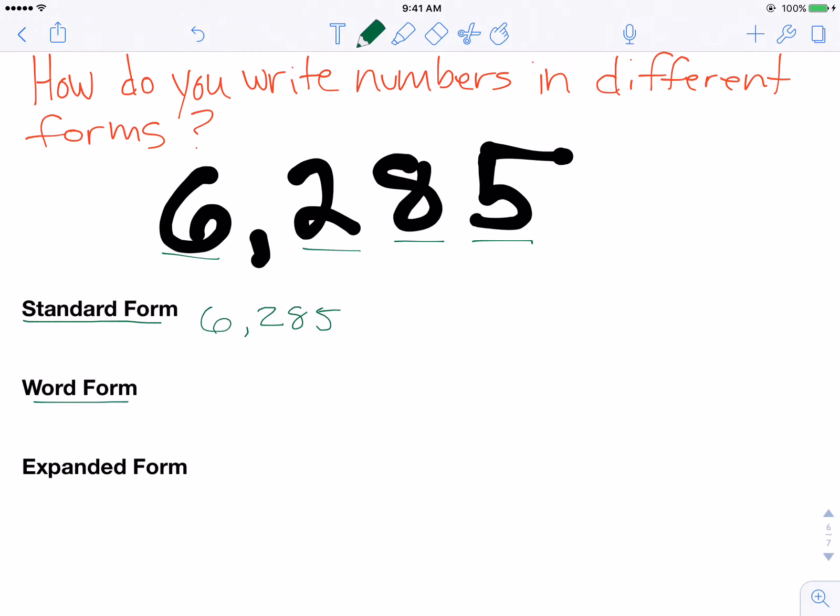Word form is using the words for the number, using words to write the number. So 6,285 is written exactly how you're speaking it: six thousand, two hundred eighty-five. So that would be the word form of the number.